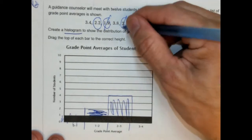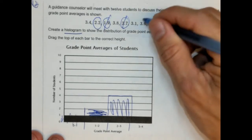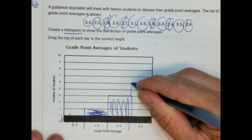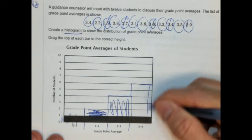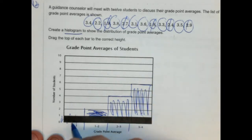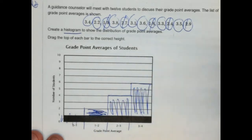And the last one, three to four, it should be the rest of these, right? So one, two, three, four, five, six. This will go all the way up to six. And that's it. So this would be empty. This would go up to here, here, and here. That's it. That's your histogram.